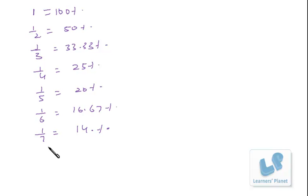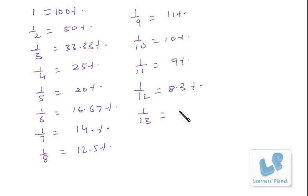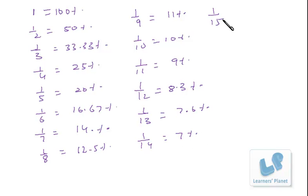1/8 is half of 1/4, which is half of 25%, that is 12.5%. Then 1/9 is around 11%, 1/10 is 10%, 1/11 is around 9%, 1/12 is 8.3%, 1/13 is around 7.6%. Up to 1/10 you should know these. 1/14 is half of 1/7, so if 1/7 is 14% then 1/14 is around 7%. Similarly 1/15 is one-third of 1/5, which is one-third of 20%, so it is 6.66%.